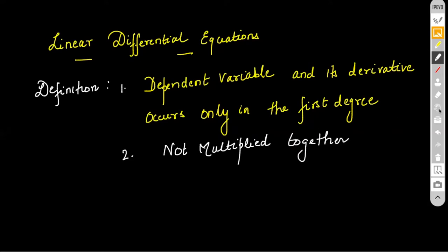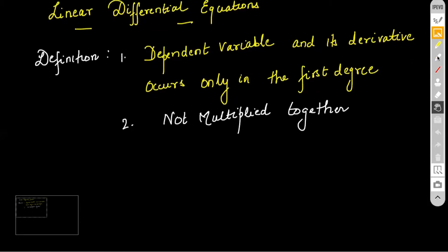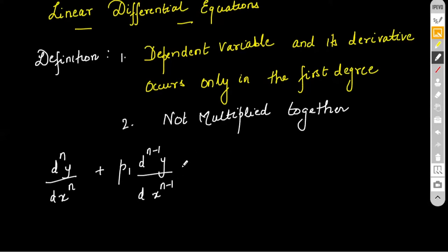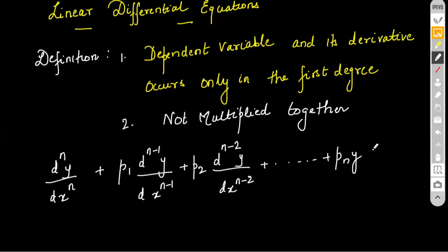A general nth-order linear differential equation looks like this: dⁿy/dxⁿ plus P₁·dⁿ⁻¹y/dxⁿ⁻¹ plus P₂·dⁿ⁻²y/dxⁿ⁻² dot dot dot plus Pₙ·y equals some function X.